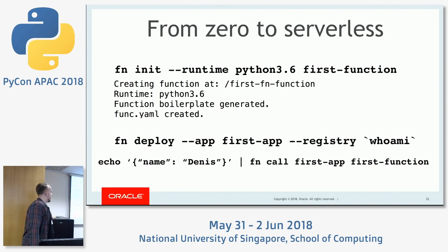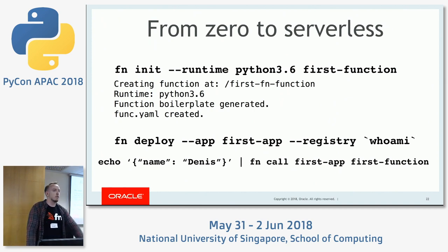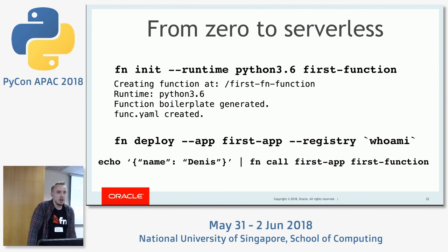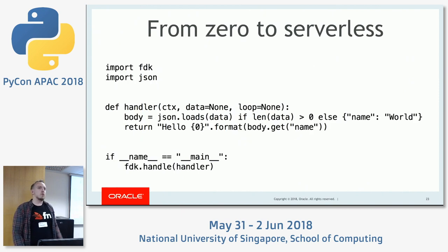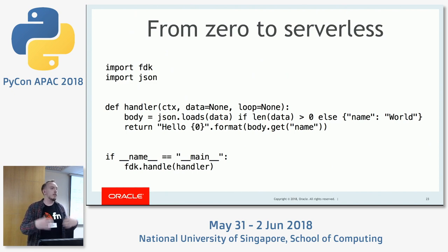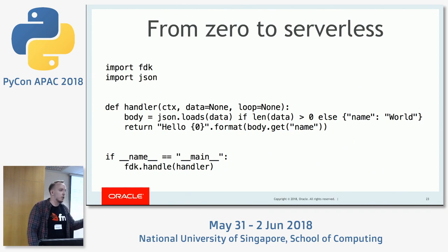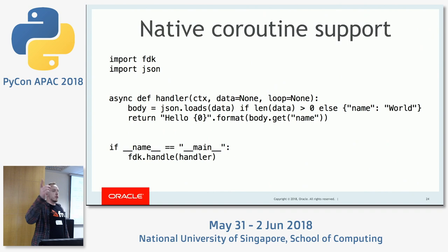This is how you can start working with Fn in Python specifically. By default, Fn supports only Python 3.6, because 2020 is pretty close and we don't want to work with Python 2.7. This is what kind of boilerplate you are going to get generated for your function — basically it is an echo function. You write this, and this function will just say hello John, hello Dan, etc.